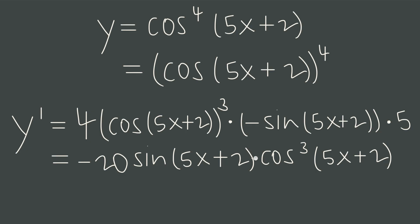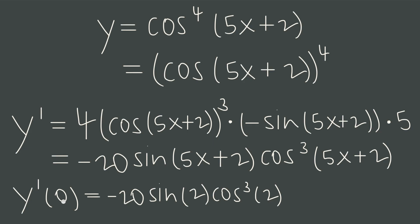This is our derivative function. Sometimes we'll be asked to find the value of the derivative at a particular point. When that's the case, always find the derivative function first, simplify it if necessary, and only then evaluate at the particular point. So if we were asked to find the derivative at x equals 0, we plug 0 into the simplified derivative function: 5x plus 2 becomes 0 plus 2, or 2. Our result is negative 20 sine of 2 cosine cubed of 2. Don't try to evaluate at a point first and then take the derivative — find the derivative function first, and then plug in the point at the end.